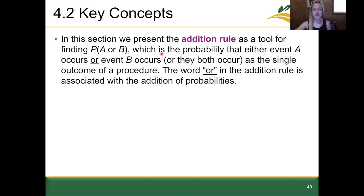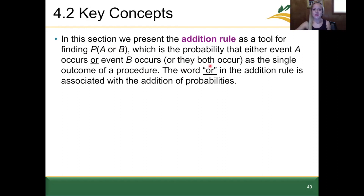For some key concepts in 4.2: when we talk about the addition rule, we're going to use this as a tool for finding the probability of event A or B occurring. The word 'or' in the addition rule is associated with the addition of the probabilities. We will also talk about the case where both A and B occur. Primarily, think about the probability of event A or B occurring — when I show you the calculations, this will make more sense.